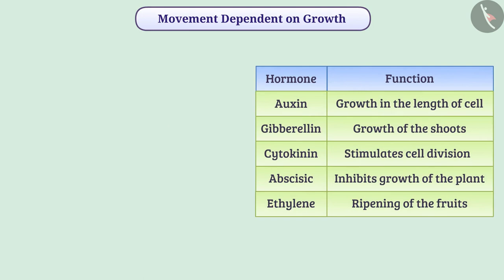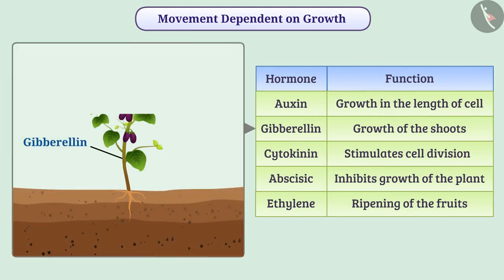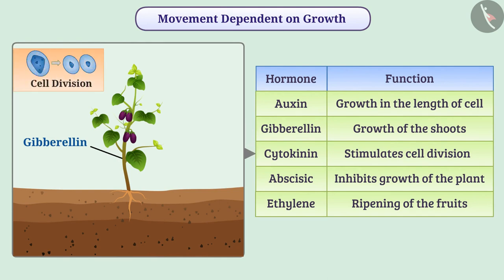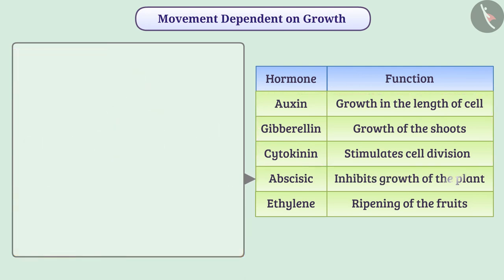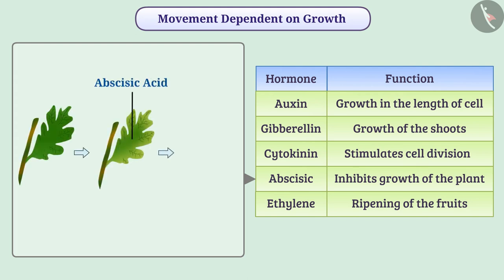In the same way, the hormone gibberellin causes growth of the shoot of the plant. Hormone cytokinin stimulates the division of cells; therefore, the concentration of cytokinin is higher in plant parts like fruits and seeds. Auxin, gibberellins, and cytokinin help the plant to grow. However, the hormone abscisic acid inhibits the growth of the plant or plant part. For example, abscisic acid causes the leaves to turn yellow from green, resulting in the wilting of the leaves.